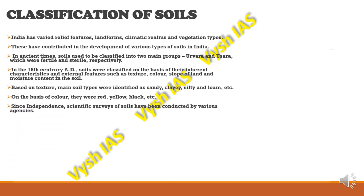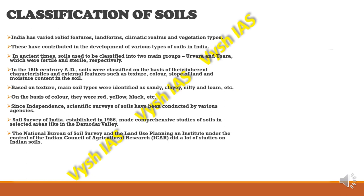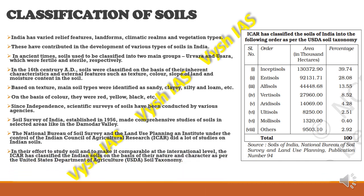Since independence, many scientific surveys of soils have been conducted by various agencies. The Soil Survey of India, established in 1956, made comprehensive studies in selected areas like the Damodar Valley. The National Bureau of Soil Survey and Land Use Planning, an institute under the Indian Council of Agricultural Research (ICAR), did extensive studies on Indian soil. Based on this, soils were classified into categories visible in the table. The ICAR classified Indian soils on the basis of their nature, character, and as per the United States Department of Agriculture soil taxonomy.